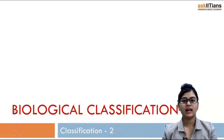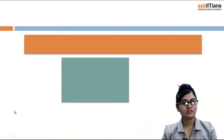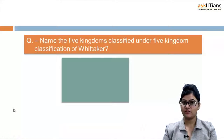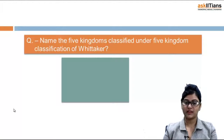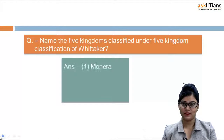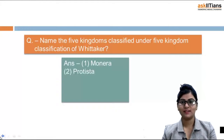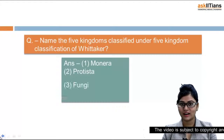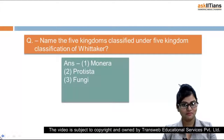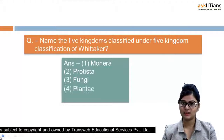My question to you is: name the five kingdoms classified under five kingdom classification of Whittaker. The first is Monera, second is Protista, third is Fungi, fourth is Plantae, and the fifth is Animalia.